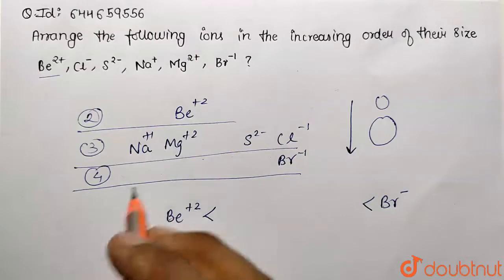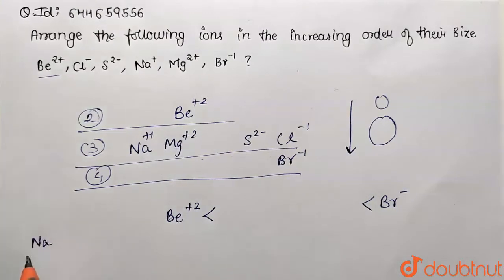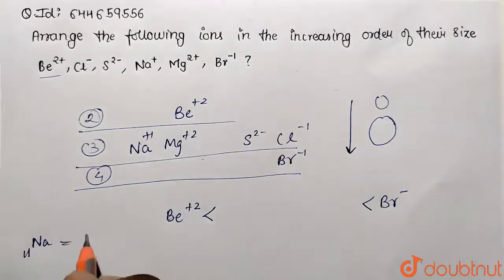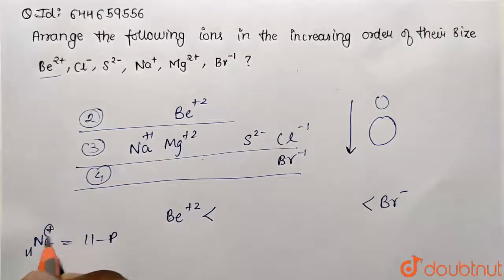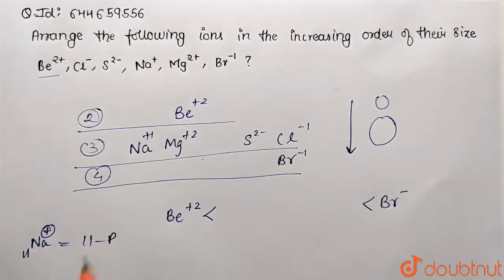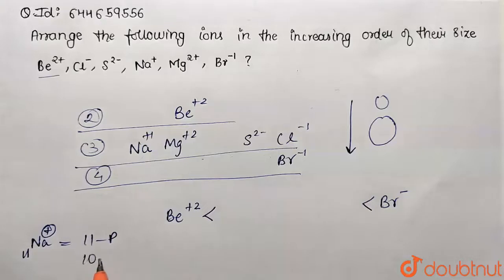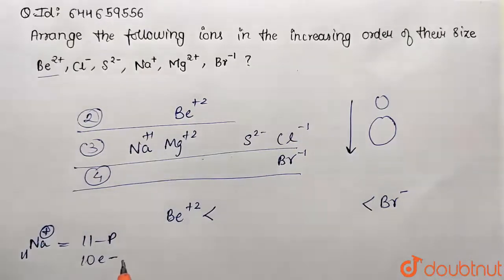So in sodium, which has atomic number 11, there are 11 protons. Basically sodium ion we are taking, and there are 10 electrons. Why? Because one electron will be ionized, so this is 10 electrons.